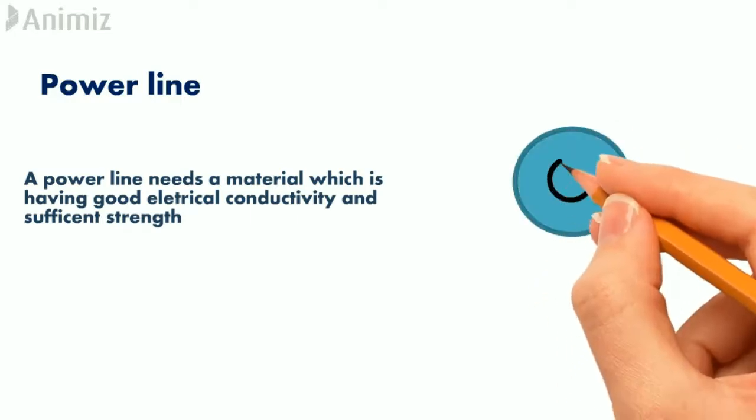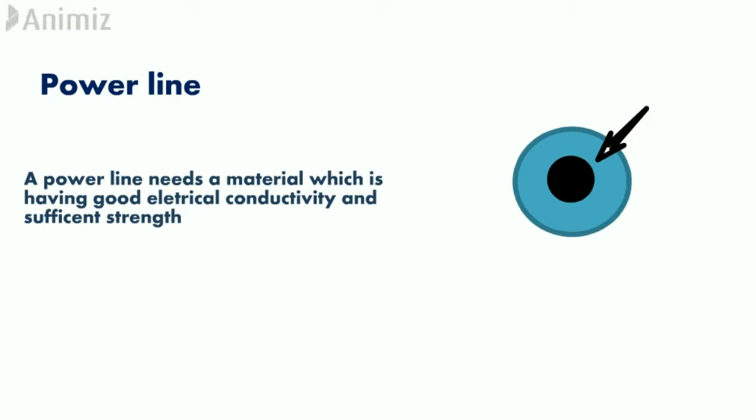If you use steel, you get the strength but it doesn't get the conductivity. When you make a combination of steel and aluminum, we can achieve the required strength and the required conductivity. To achieve it, we have to form a composite material between the aluminum and the steel.